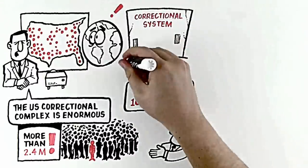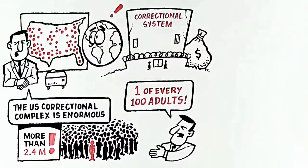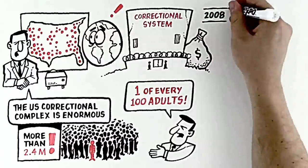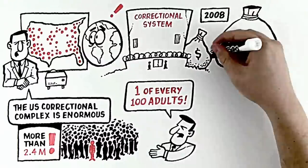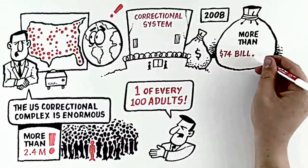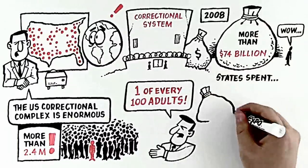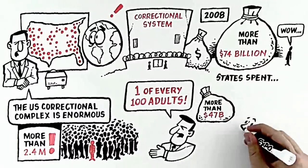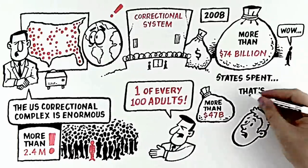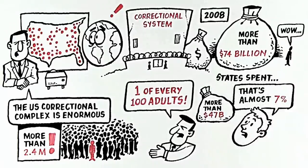But our correctional system is not just huge, it is also astonishingly expensive. In 2008, federal, state, and local governments spent more than $74 billion on corrections. In the same year, states spent more than $47 billion of their general funds on prisons. That's a shocking 7% of all state discretionary spending.